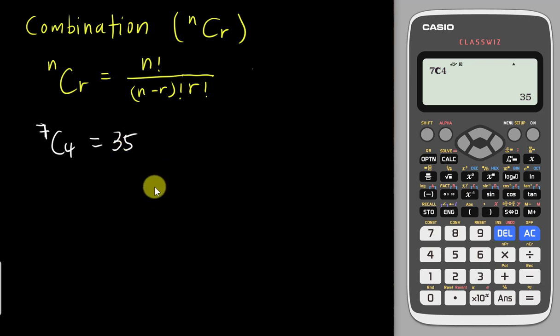If I want to do it manually, it's 7 factorial over (7-4) factorial, and multiply again for 4 factorial, because my r is 4 and my n is 7. I can tap everything into the calculator. The factorial button is above the X. So 7 factorial over (7-4) which is 3 factorial, then multiply 4 factorial, and the calculator gives the same result, which is 35.